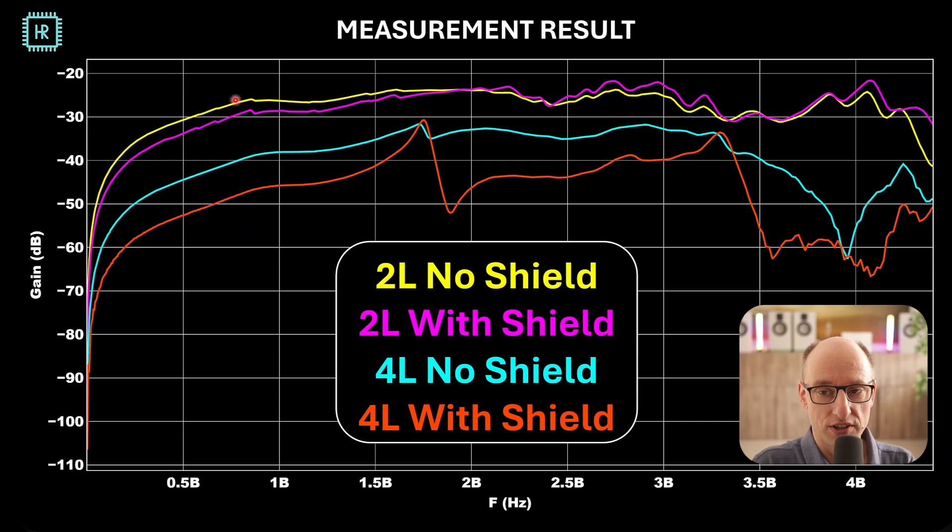So the top two characteristics are the characteristics with the two layer board. And you see that the loss is relatively low, something like 25 decibels. And what is interesting to see is that the shield doesn't have that much impact. It helps a little, but not much.